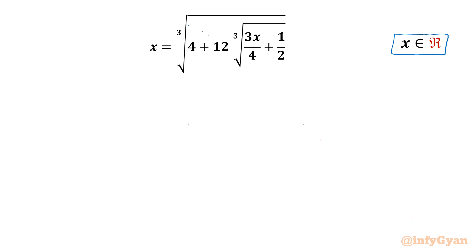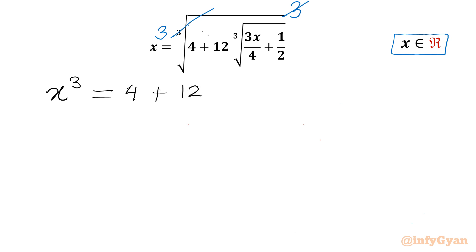Let's get started by cubing both sides. Cubing both sides, the cube root and cube cancel out. So our equation becomes x cubed equals 4 plus 12 times the cube root of — let's take LCM — 3x plus 2 divided by 4.